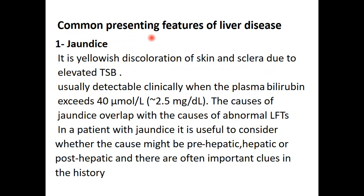After finishing the investigation of a patient with liver disease, we now talk about the common presenting features of liver disease. The main presenting feature is jaundice. Jaundice is a yellow discoloration of the skin and sclera due to elevated total serum bilirubin. You can detect it clinically by looking at the sclera, especially in daylight. If the bilirubin is more than 2.5 to 3 mg/dL, you can detect it clinically. There are three types of jaundice: pre-hepatic (hemolytic), hepatic, and post-hepatic.